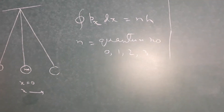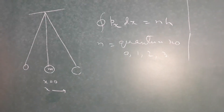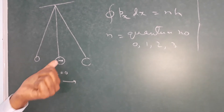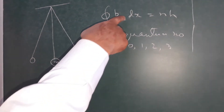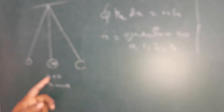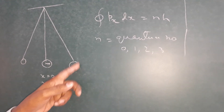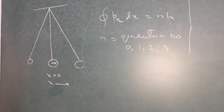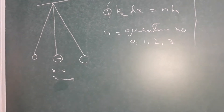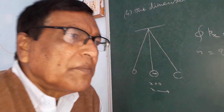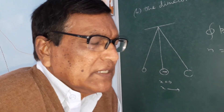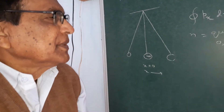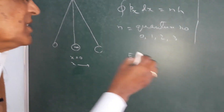The problem is that both px and x are changing periodically. When the particle is at x = 0, px is maximum; when the particle is at the extreme position, px = 0. Since both px and x are changing periodically, the integration is a bit involved. We can do it by a graphical method or by direct integration — here we use the direct mathematical method.